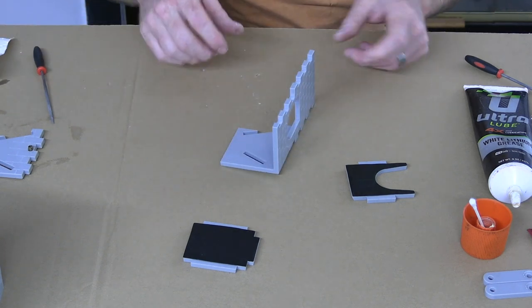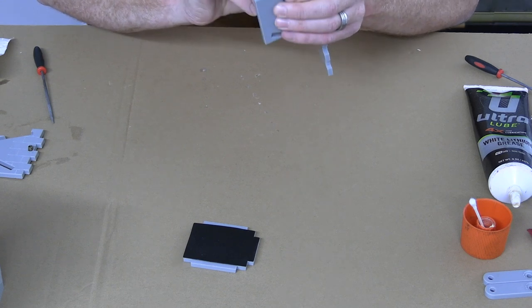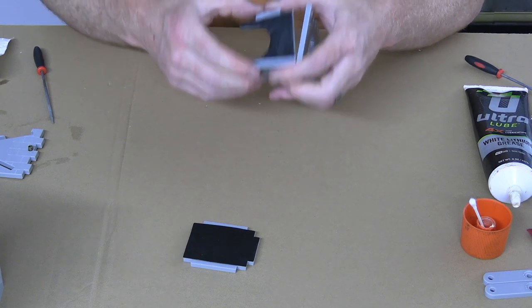Once that's all together and cleaned up, we're going to go ahead and install the dice ramps. Make sure that these have the cloth side facing up and there is no need to add any glue at this time.